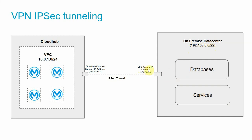The VPN endpoint on the on-premise side has a remote IP address, for example 197.87.60.90. When we configure the VPN we provide this remote IP address. Once the Anypoint VPN is configured, it will provide the cloud-side external gateway IP addresses that need to be configured on the VPN device.